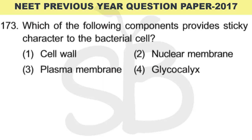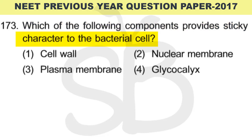Question number 173: Which of the following components provides sticky character to the bacterial cell? The correct answer is option 4: glycocalyx.